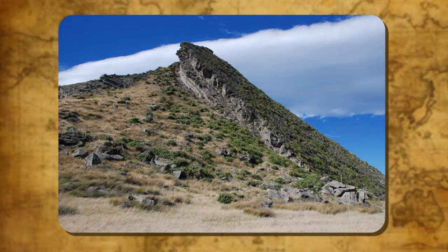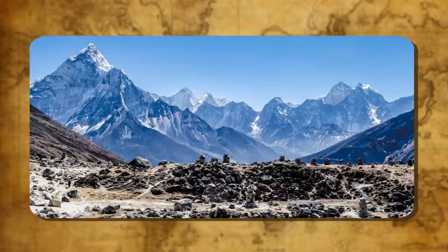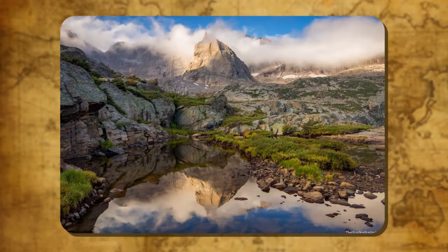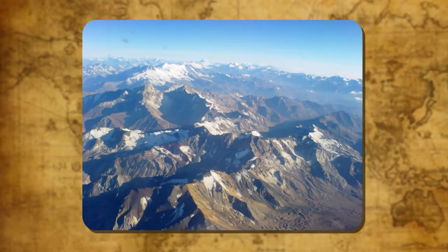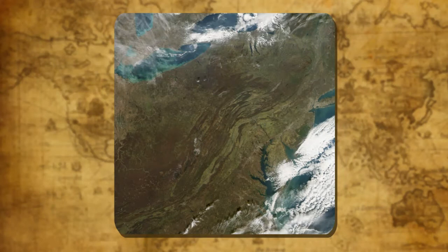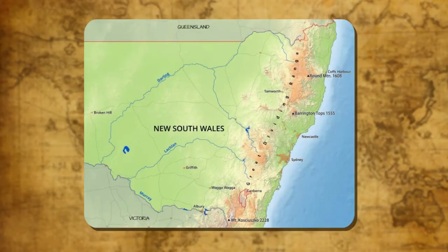Fold mountains are characterized by rugged relief and pointed peaks. The Himalayas, the Alps, the Rockies and the Andes are examples of young fold mountains, whereas the Aravallis, the Appalachians and the Great Dividing Range of Australia are old fold mountains.